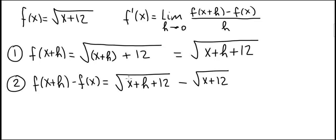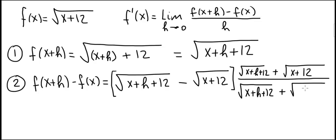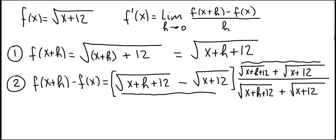In order to do that, we're going to multiply by the conjugate and of course divide by its conjugate. The conjugate of square root of x plus h plus 12 minus square root of x plus 12 is square root of x plus h plus 12 plus square root of x plus 12, divided by the same expression in the denominator. We haven't changed anything — this is just one.